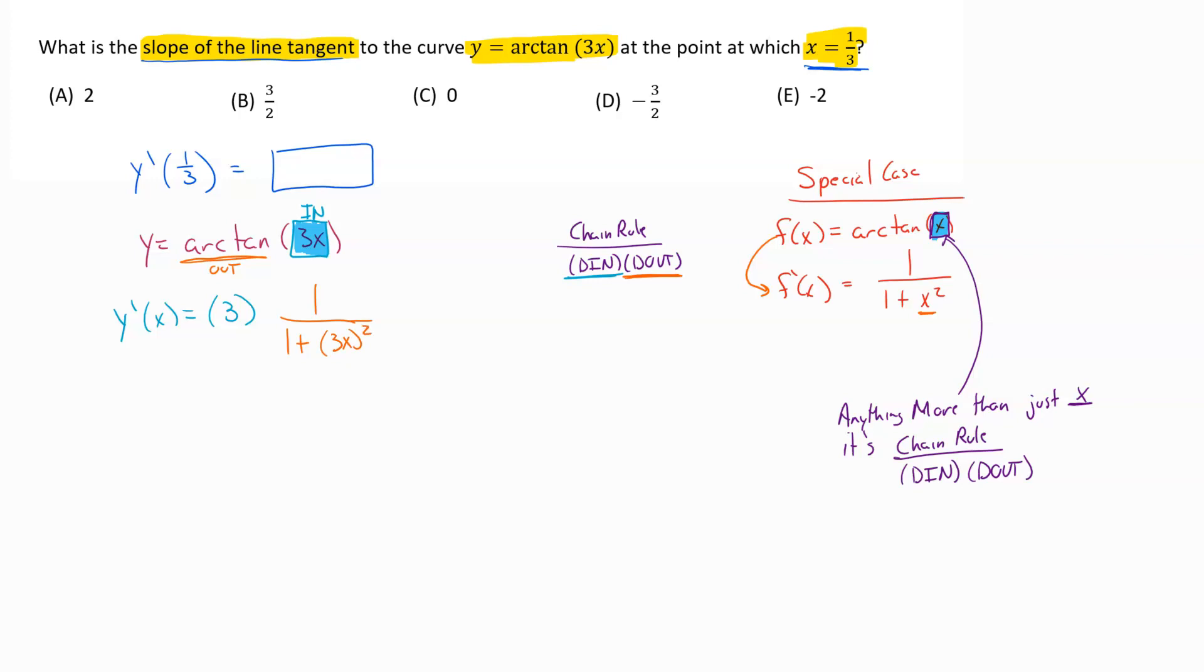So whatever they replaced x with up top there, you end up needing to replace that in this definition as well. So there's our derivative. And now that we've got the derivative, now we're ready to go ahead and find what we were looking for, which is what's the derivative value at x equals 1 third.